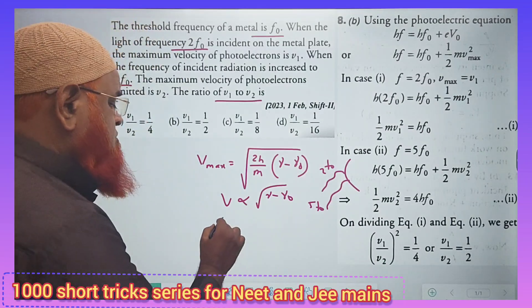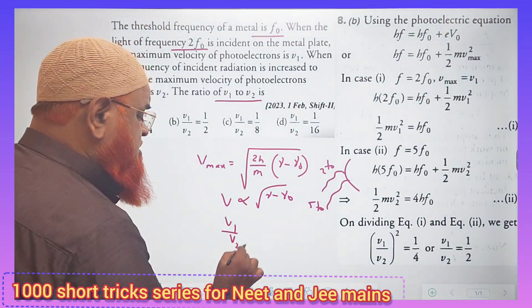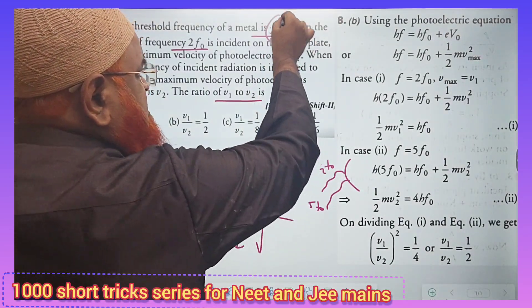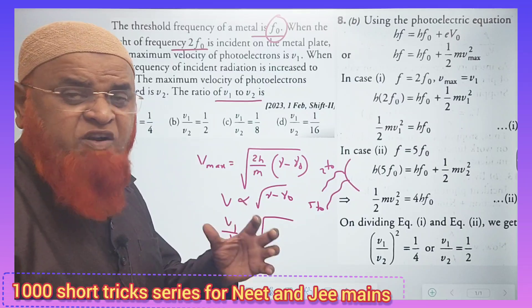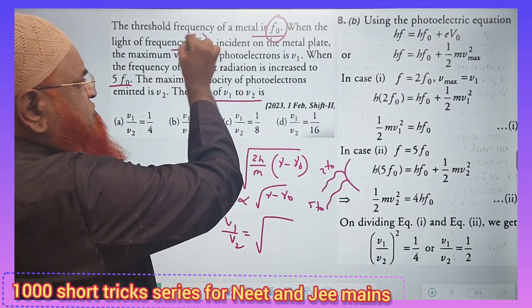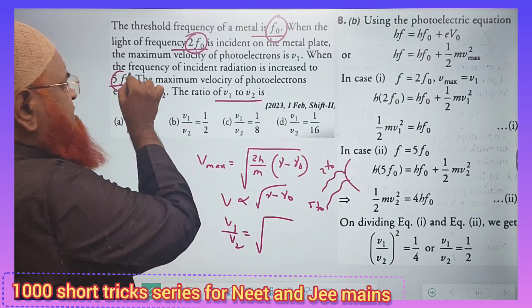So what we will do now? V1 by V2 is equal to square root of difference in the frequencies. First of all, you know, the frequency coming - I mean, work function frequency is F0 in a metal. And the second one is 2F0, and the third one is 5F0.